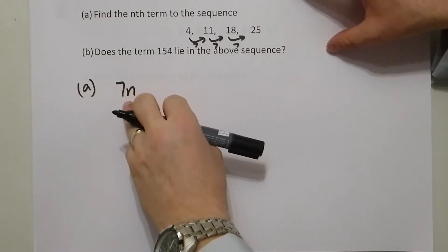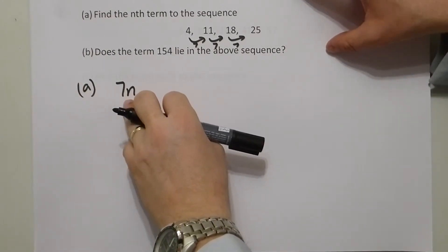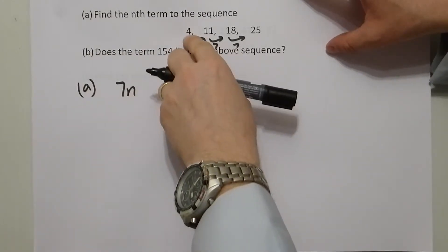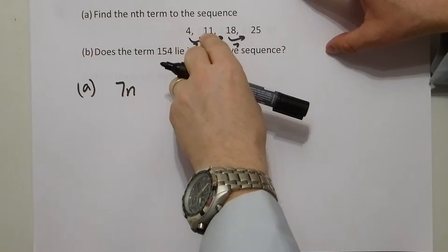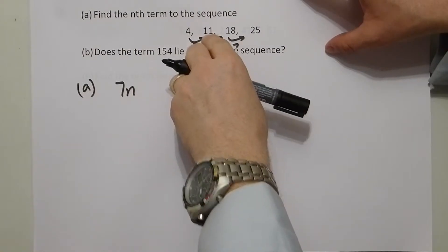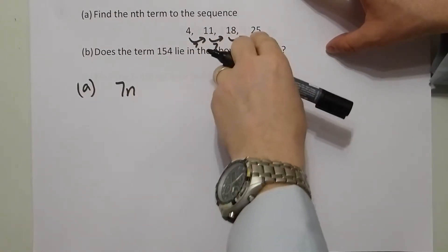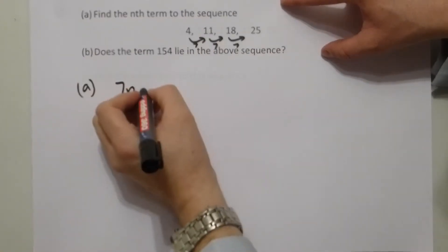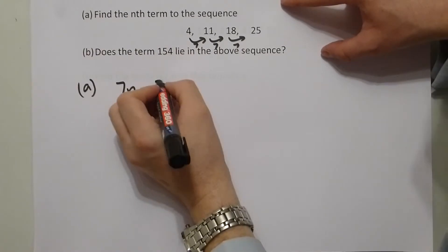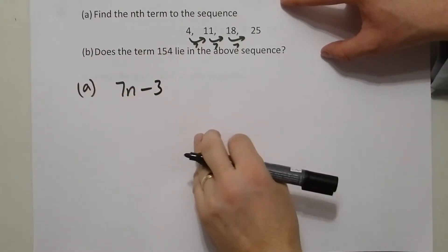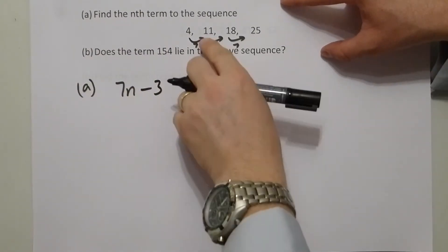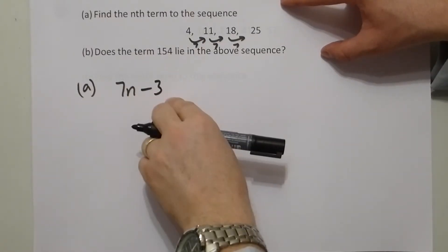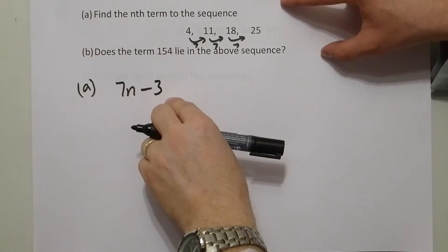However, the 7 times table produces the sequence 7, 14, 21, 28. And this sequence is clearly 3 less each time. So the nth term is given by 7n take 3.